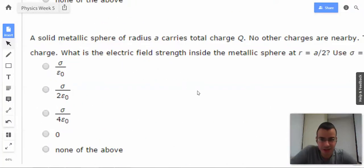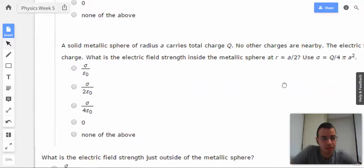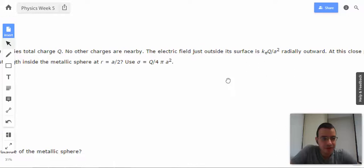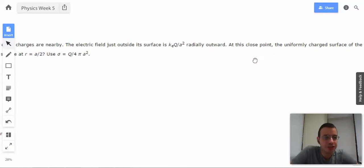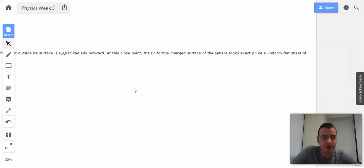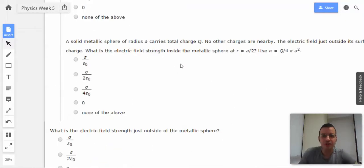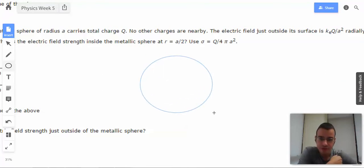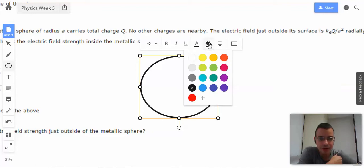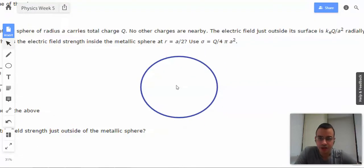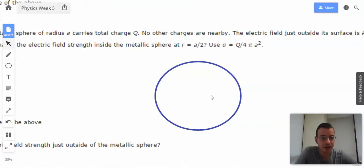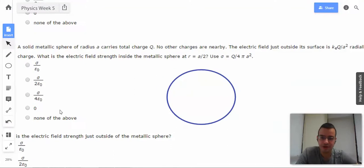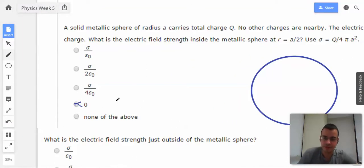A solid metallic sphere of radius A carries a total charge Q. No other charges are nearby. The electric field just outside its surface is kQ over A squared. What is the electric field strength inside the metallic sphere at r equals A over 2? So I'll draw a sphere. The idea here is it's a metallic sphere, so the charges are on the outside, and there's going to be no electric field on the inside. There is no electric field inside a conductor. So zero.